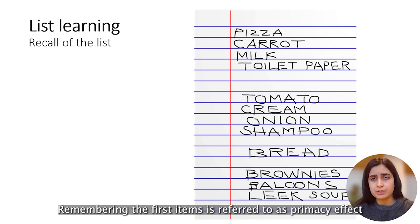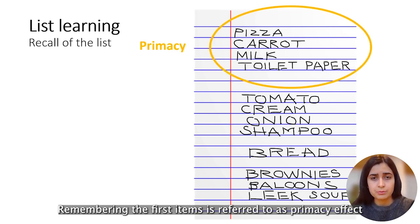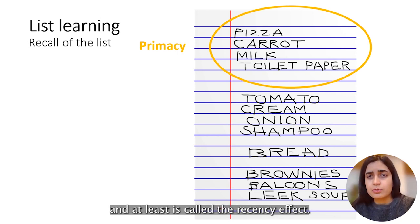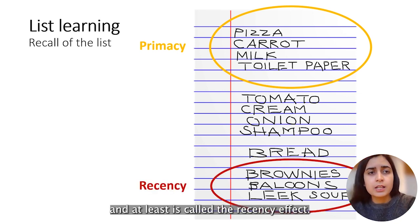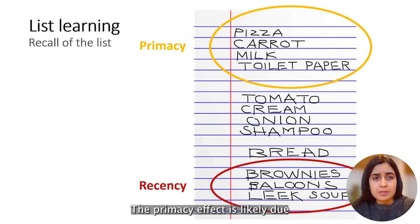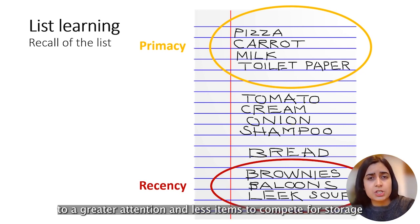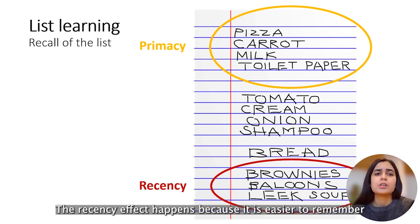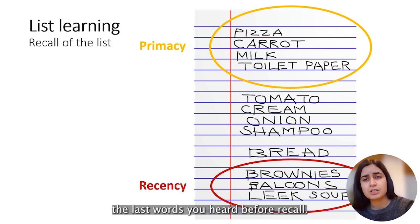Remembering the first items is referred to as the primacy effect, while remembering the last items on the list is called the recency effect. The primacy effect is likely due to greater attention and fewer items competing for storage at the beginning. The recency effect happens because it is easier to remember the last words you heard before recall.